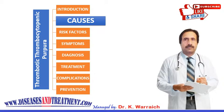The other form is acquired TTP. In this case, your body mistakenly produces proteins that interfere with the enzyme's job. You can develop acquired TTP if you have HIV, or after certain medical procedures such as blood transfusion, bone marrow stem cell transplant, or surgery.